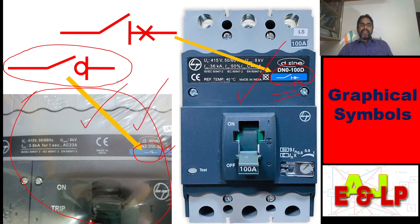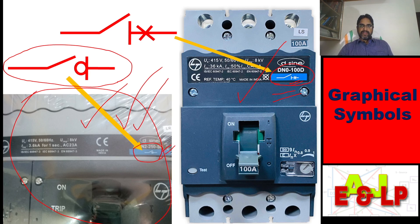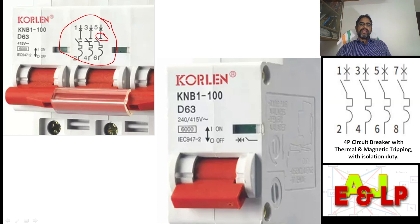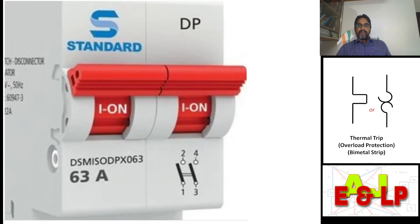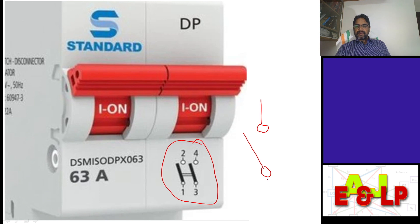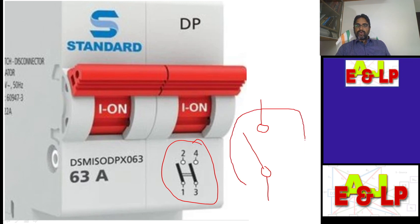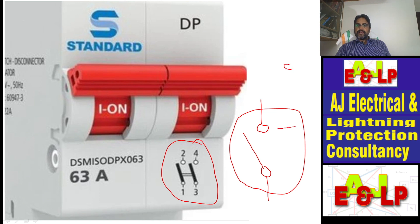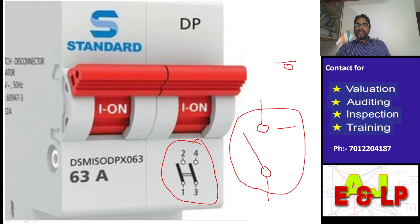In a previous video I mentioned the requirement of an isolator in a fire pump circuit. In such cases, instead of the conventional isolator, we can use this type of MCCB — a switch disconnector without any protections, which can function as a switch as well as an isolator. Now here in this picture it is a circuit breaker with isolation duty and having both trippings. Here there is a conflict — the symbol shown is that of a switch, not even an isolator. If it is an isolator, the horizontal line should be shown there.